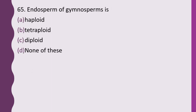Question 65. Endosperm of gymnosperms is: haploid, tetraploid, diploid, or none of these. The correct answer is option A, haploid.